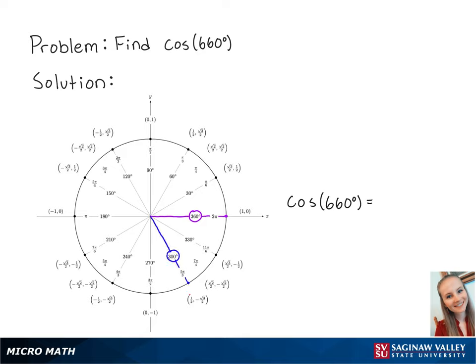Cosine correlates to the x-coordinate on the unit circle. So cosine of 660 degrees is equal to 1/2. And this is the final answer.